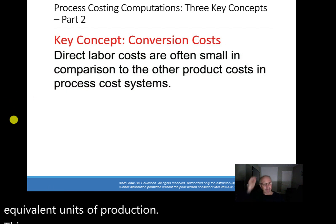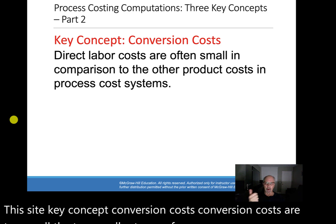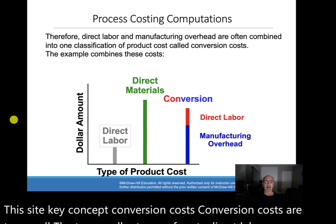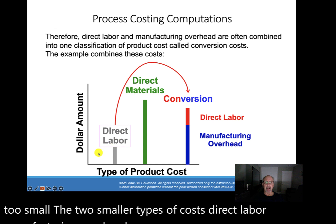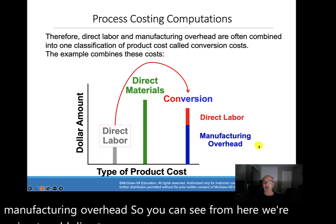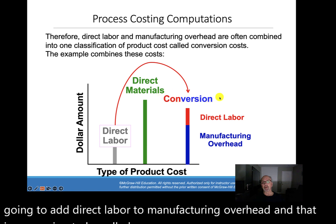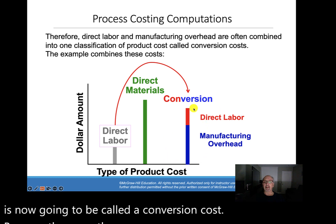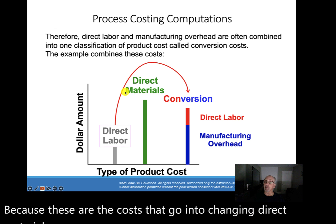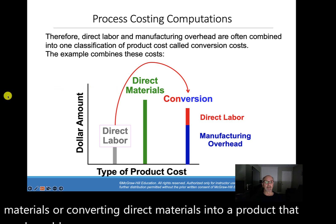A key concept here is conversion costs. Conversion costs are the two smaller types of product costs: direct labor and manufacturing overhead. We add direct labor to manufacturing overhead, and together they are called conversion costs — because these are the costs that go into converting direct materials into a product that can be sold, that consumers are looking for.